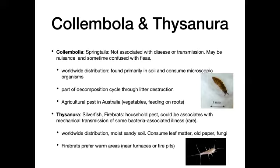Going through the arthropods quickly — many classes we'll discuss are not involved in transmitting diseases, but they are part of the arthropods so we need to mention them. Collembola are your common springtails — no known disease transmission at this time. Sometimes they're confused with fleas; they're very small, usually even smaller than fleas. They're found mostly in soil, help with decomposition, consume bacteria, fungi, and other microscopic organisms. In some farm areas they can feed on small root hairs and cause loss of production in agriculture.